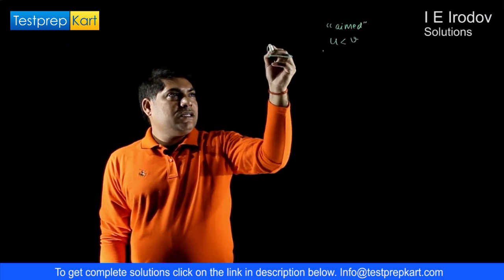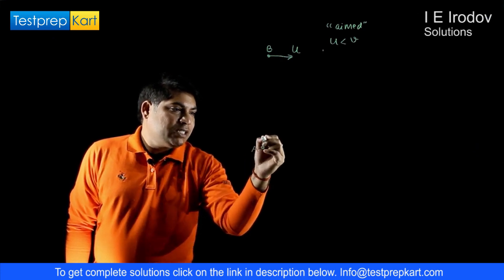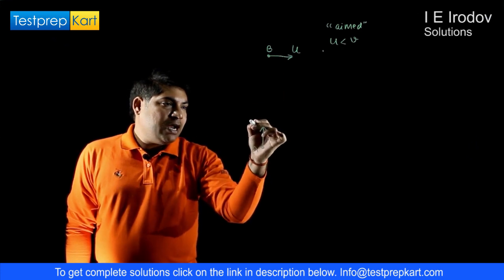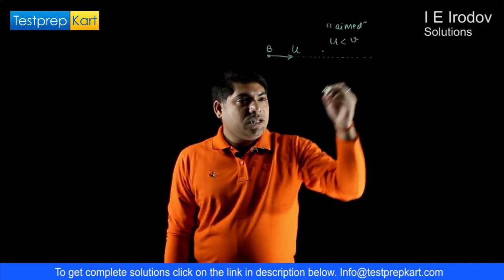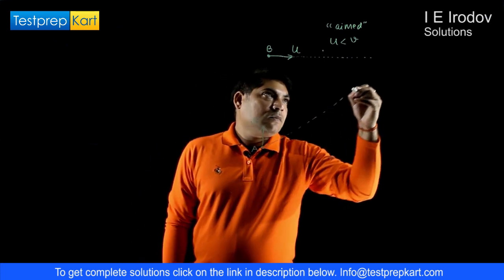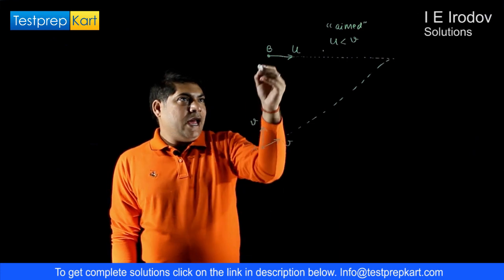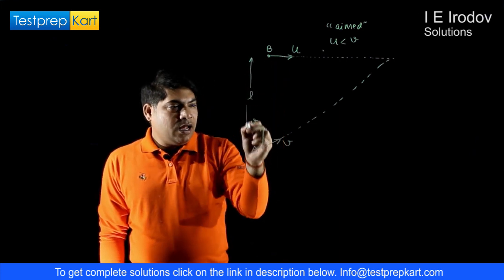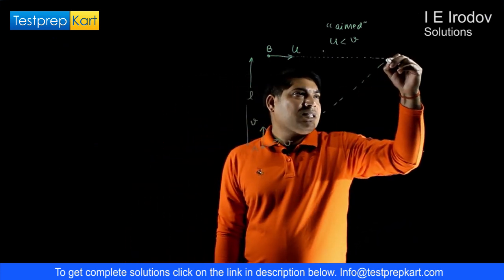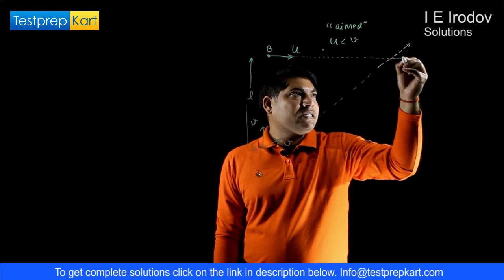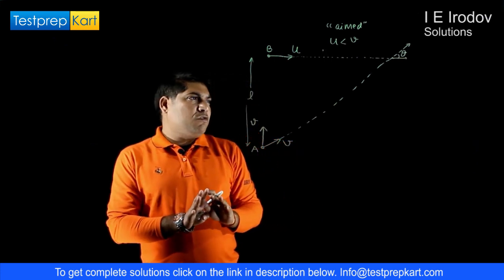Point B is moving with some initial velocity u, and point A is initially positioned perpendicular to point B. Point A continuously changes its direction to remain aimed towards B — so if B moves in one direction, A keeps adjusting its direction toward B while moving with velocity v. The initial distance between them is l, and we need to find the time required for the two points to converge. At any instant, let the angle between them be theta.